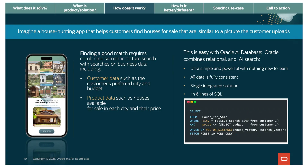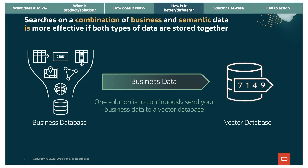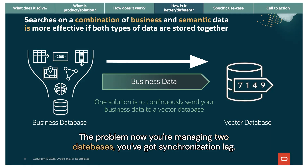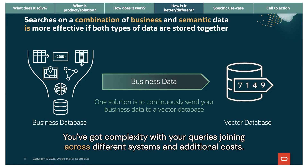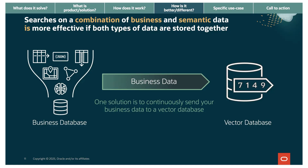This is production-ready today. But how do you combine vector search with existing business data effectively? Here's the problem many organizations face: some vendors push continuously sending your business data to a vector database, setting up pipelines, keeping everything synchronized. The problem? Now you're managing two databases. You've got synchronization lag — the vector database is always slightly behind — data governance issues, complexity joining across different systems, and additional costs to license and maintain a separate database. Does this simplify or complicate your life?